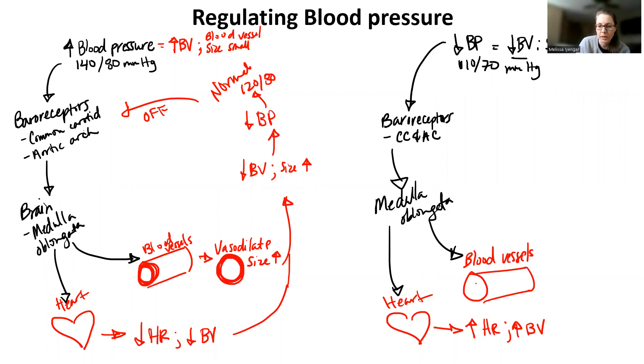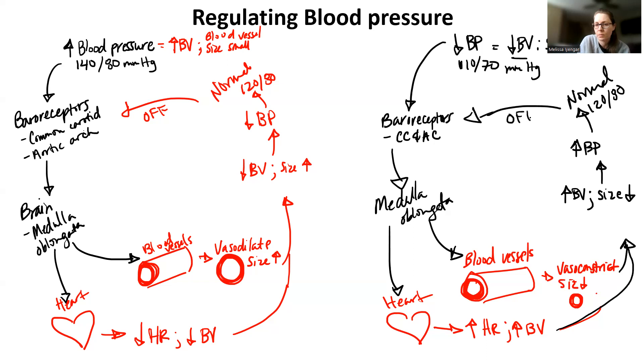The other thing I'm going to do here is I'm going to vasoconstrict. So I'm going to make my lumen size smaller. Both of these things together are going to basically cause an effect where blood volume increased and size decreased, which is basically the opposite of what my stimulus was. And that's going to cause my blood pressure to increase. Again, if I go back to normal, I'm at 120 over 80, that's going to turn off the system.